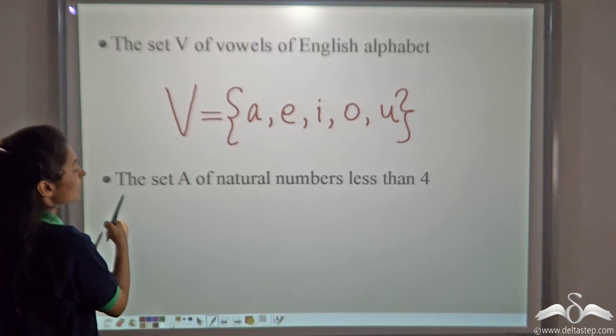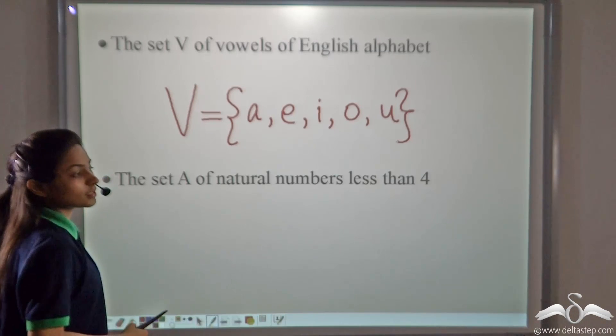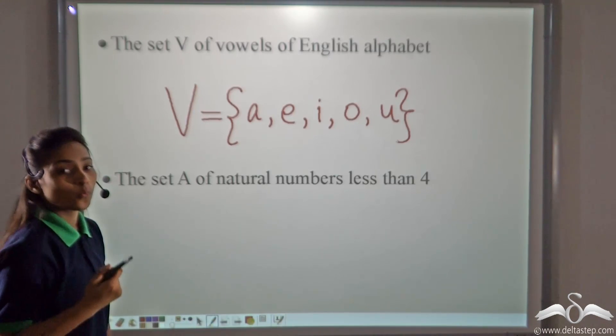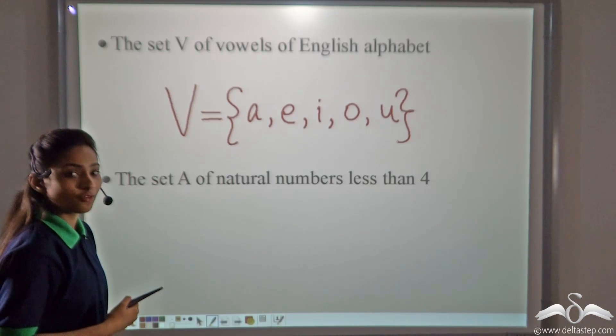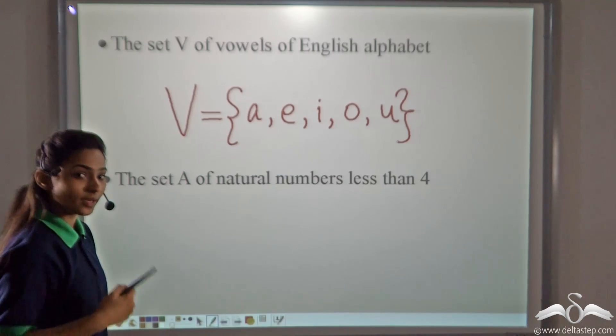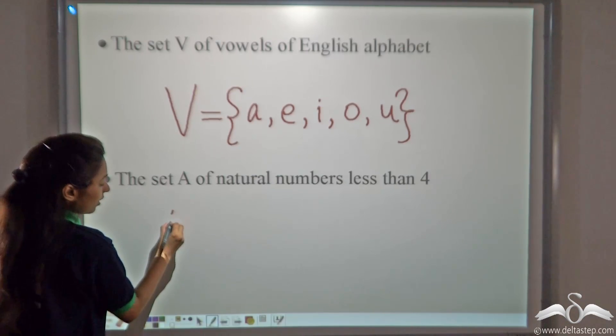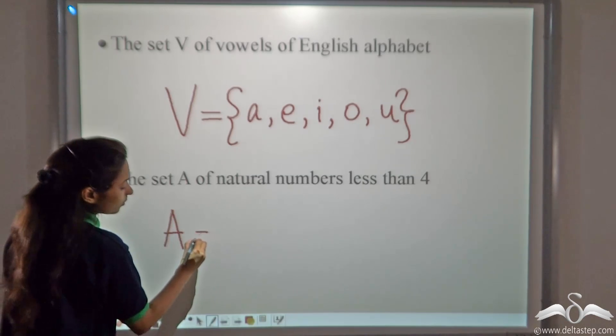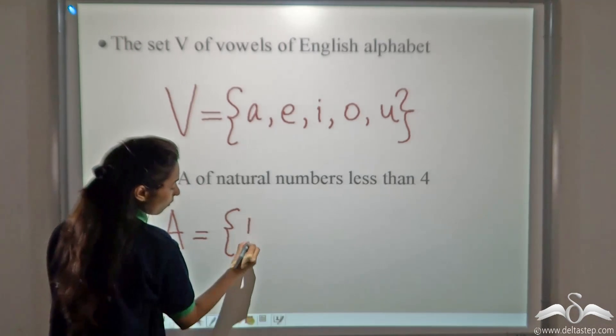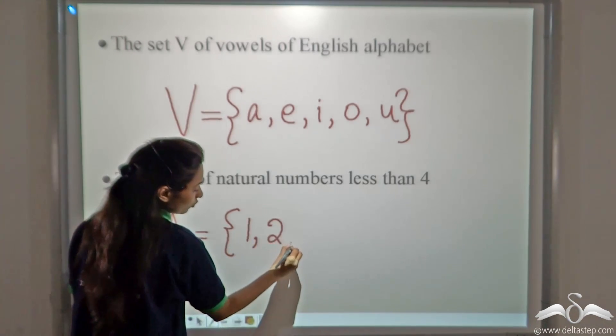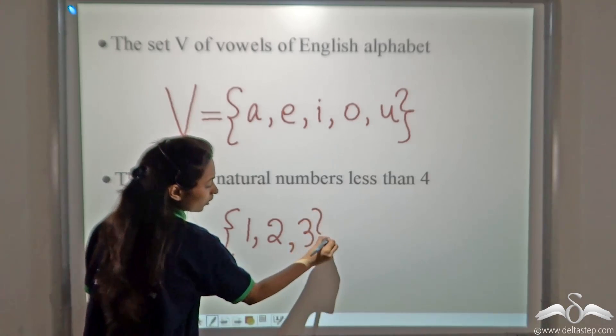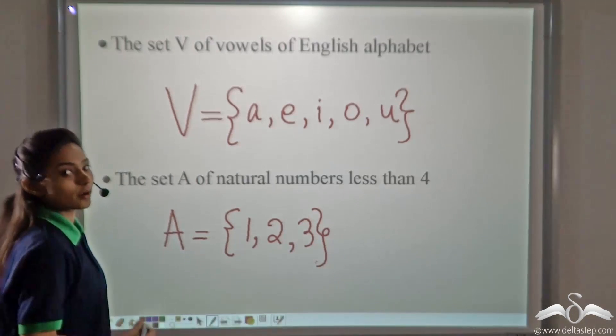The set A of natural numbers less than 4. Which are the natural numbers less than 4? 1, 2 and 3. So, let's write it. A is equal to 1, 2, 3 and we close the bracket. So, this is our answer.